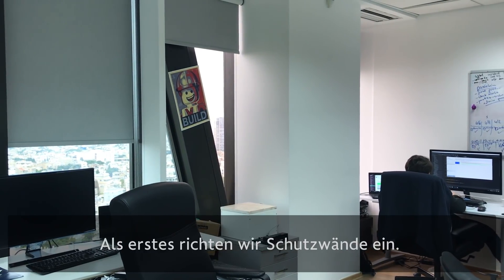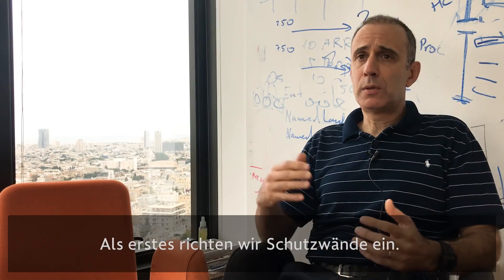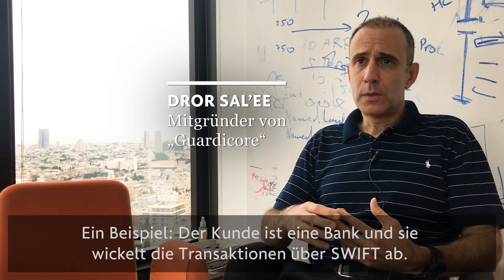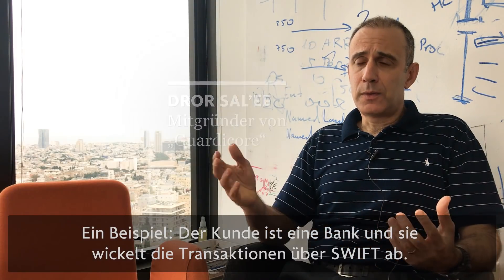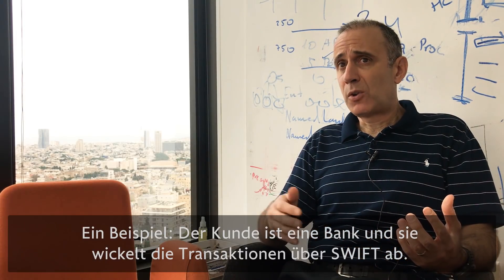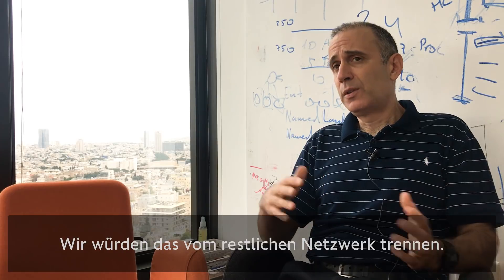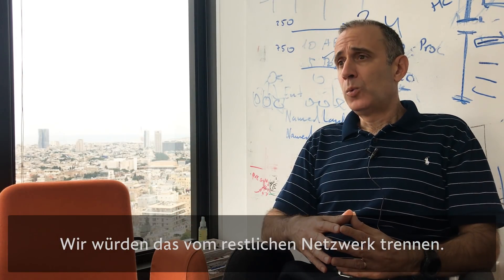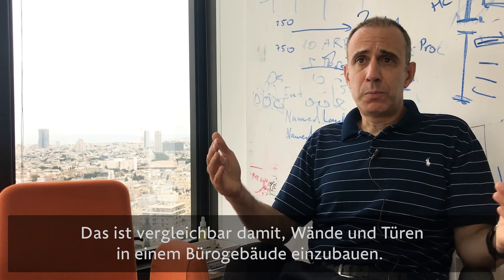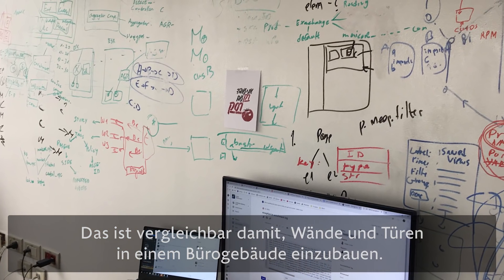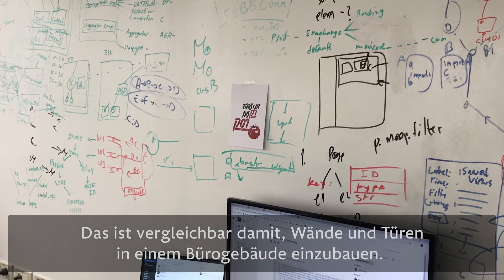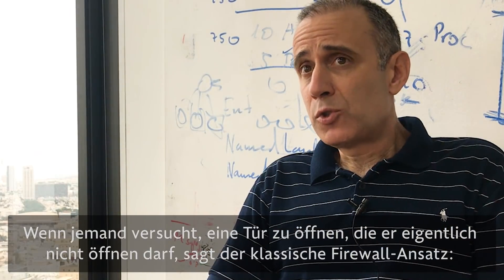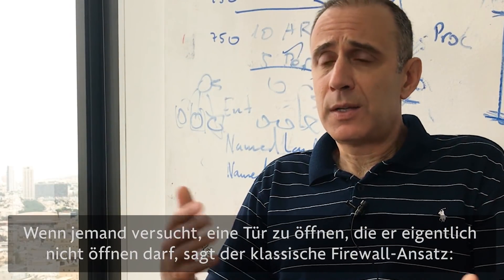The first thing that we do is enable placing walls. One example is a customer who is a bank — he has a SWIFT environment and he would be separating that from the rest of the network. This is equivalent to placing walls and doors in an office building, and if somebody tries to open a door that he's not supposed to open...